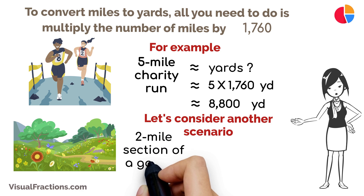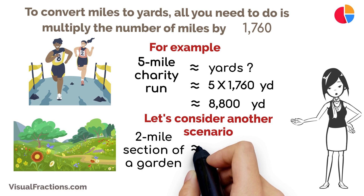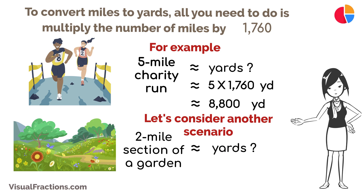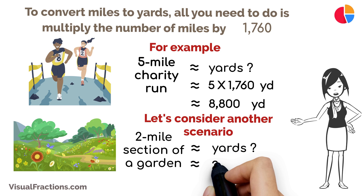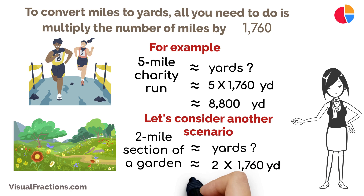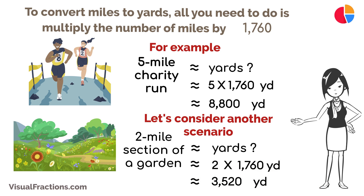Let's consider another scenario. If you're a landscaper and need to measure the length of a two-mile section of a garden, converting it to yards is straightforward. Just multiply two miles by 1,760 to get 3,520 yards.